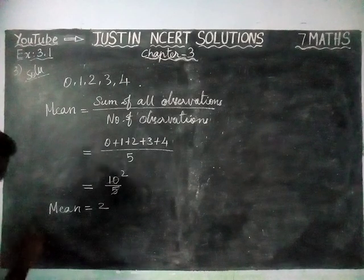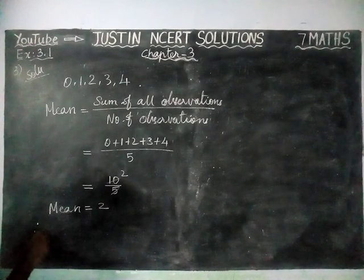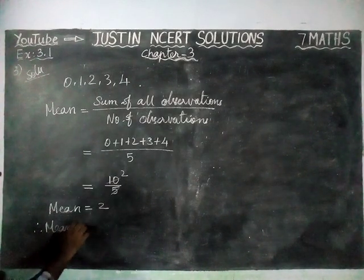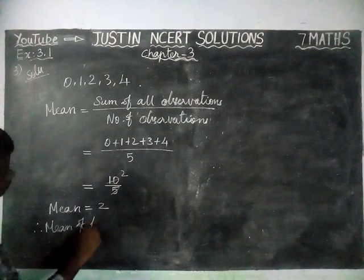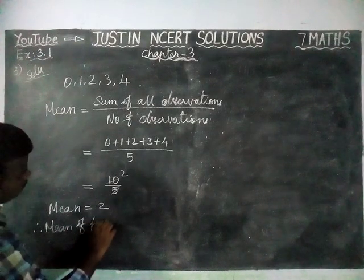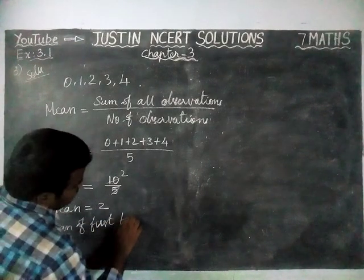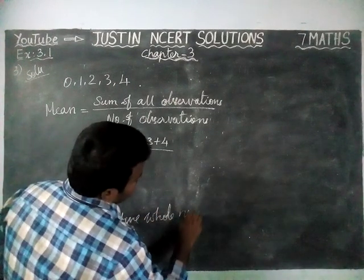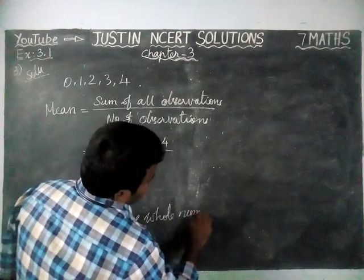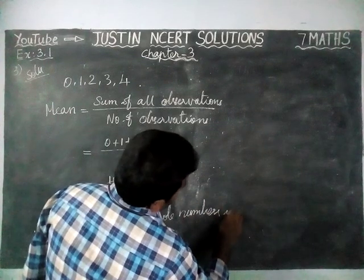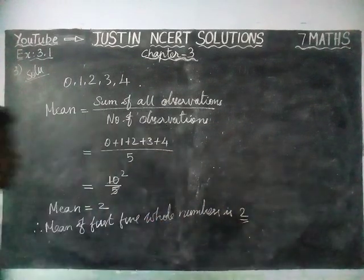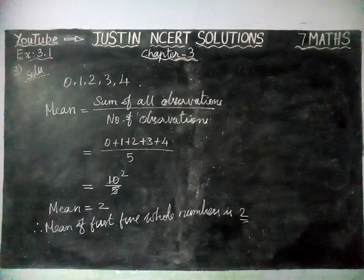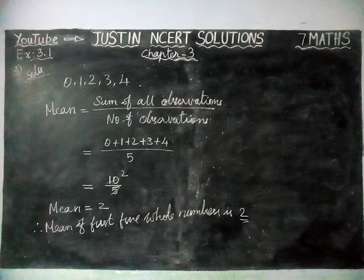Therefore, the mean of the first 5 whole numbers is 2. That is all, students. Kindly give your suggestions in the comment box, share this video with your friends, and subscribe to our channel. Thank you.